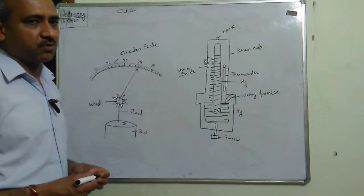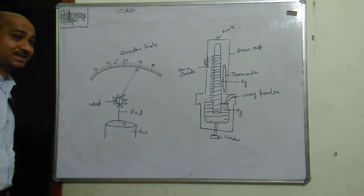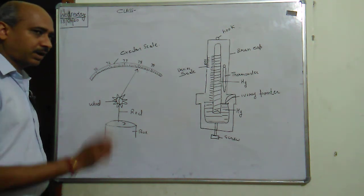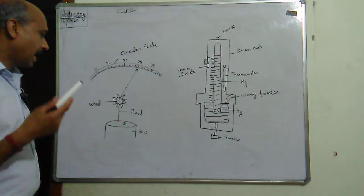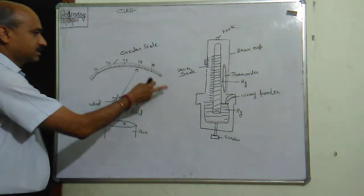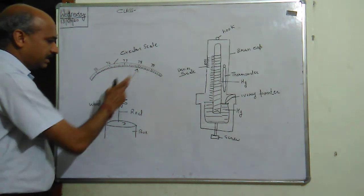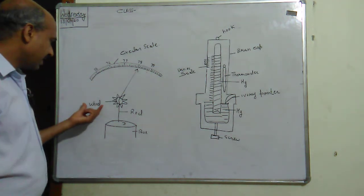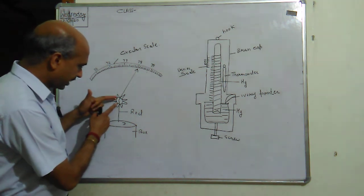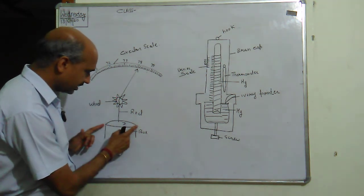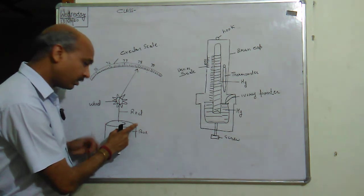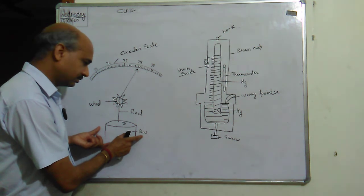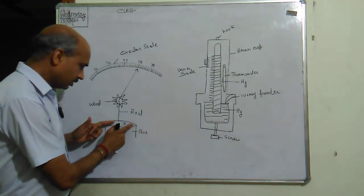Now we have the aneroid barometer. This is a special type of barometer. In this barometer, we are not using any liquid. I am simply using a circular scale, a needle which gives me the reading, and we have a wheel. The wheel is connected by a rod to a balloon or a rubber case, or we can use a box also.